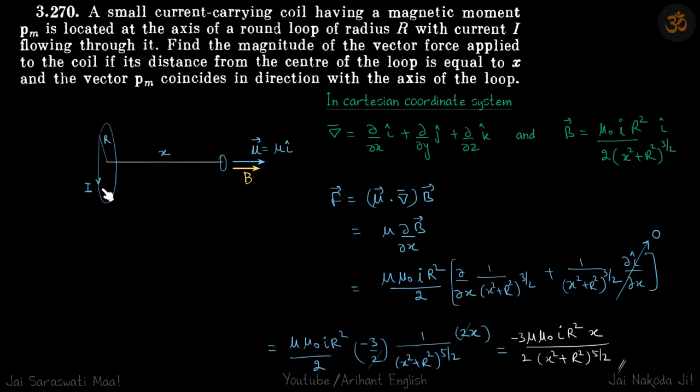In this question we are given a big current carrying loop which has a current I flowing through it and at a distance x we have another small loop which has a magnetic moment mu. We are supposed to find the magnitude of the force on this small coil.